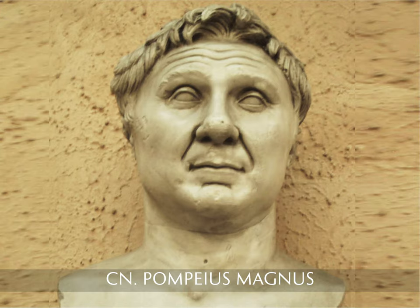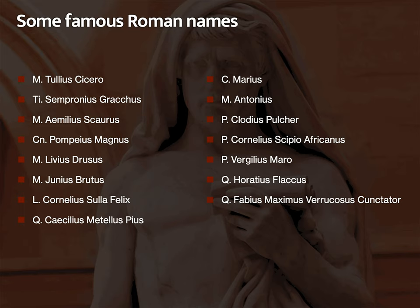Lucius Cornelius Sulla Felix — Felix means lucky or fortunate. Sulla gave himself this cognomen because he considered himself fortunate; for his enemies it was used derogatorily. Quintus Caecilius Metellus Pius — Pius means he was loyal to his father, something the Romans could honor. So sometimes you find a genuinely positive cognomen.